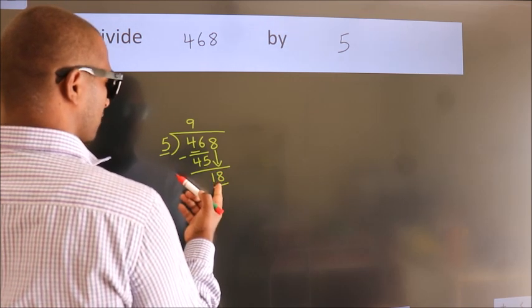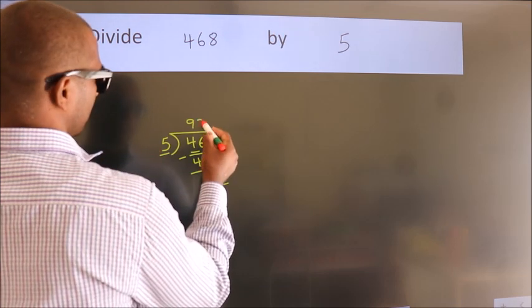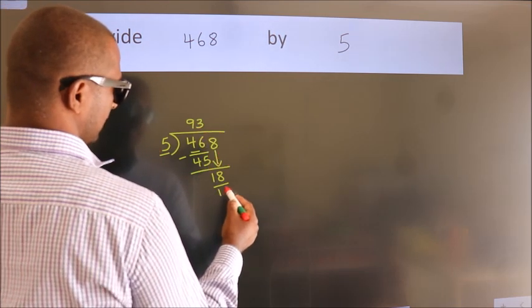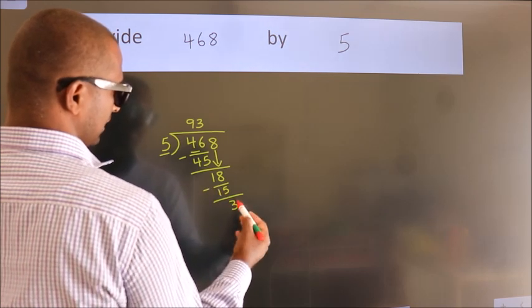A number close to 18 in 5 table is 5 threes 15. Now we subtract. We get 3.